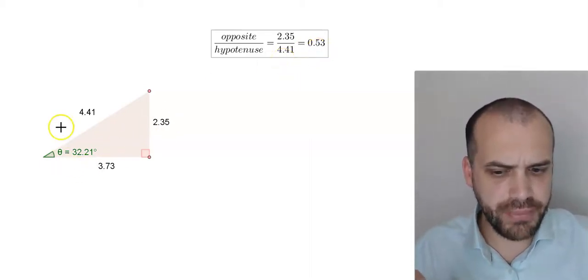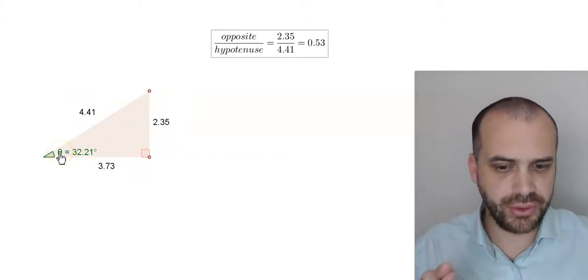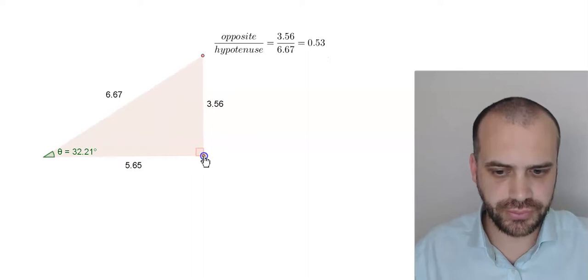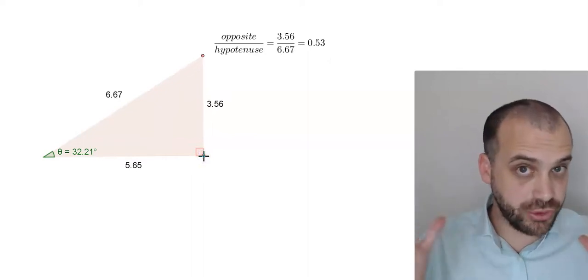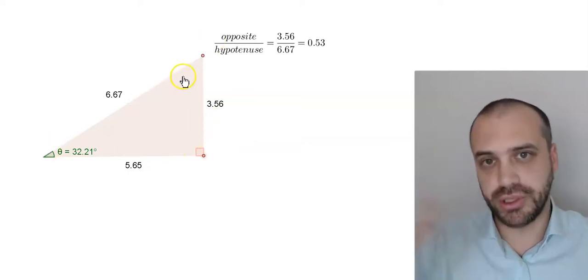Now what happens if I make this triangle larger but keep this angle the same? Watch this. Okay that's a bigger triangle with different lengths for the opposite and the hypotenuse. Longer lengths.